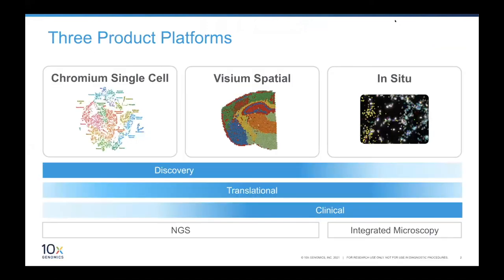Visium is one of three very powerful platforms that 10x offers. There is the single cell powerhouse where 10x made its name, constantly innovating — and today you saw the power of combining single cell with the Visium platform. Then there is the in situ platform following our acquisition of Readcoor and Cartana — another made-in-Sweden company. The in situ platform is lower plex but doesn't need a sequencing output; it's an image-based readout that gives you, when you know what you're looking for, a very focused, extremely high-resolution assay to detect genes of interest. These three platforms sit very nicely together and offer researchers great choice and power.